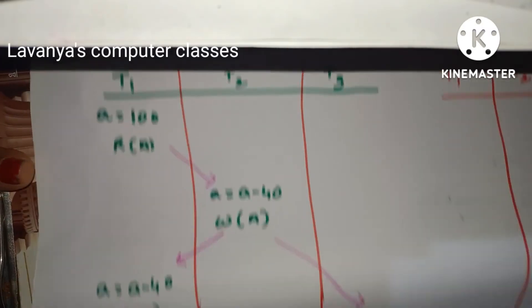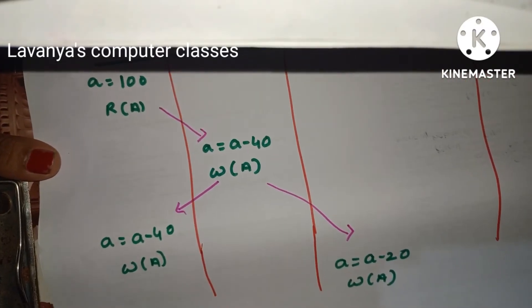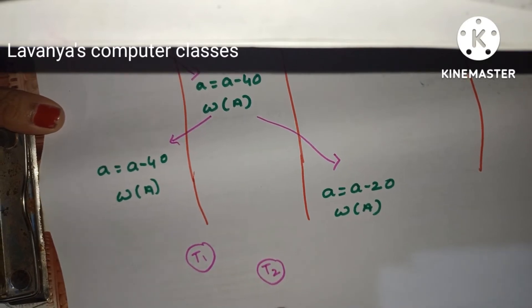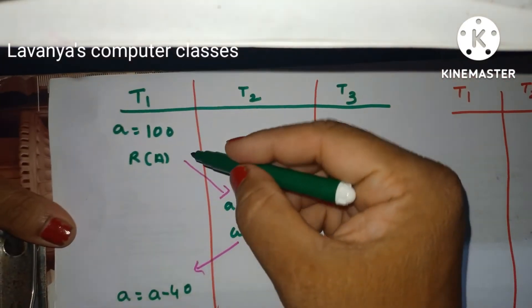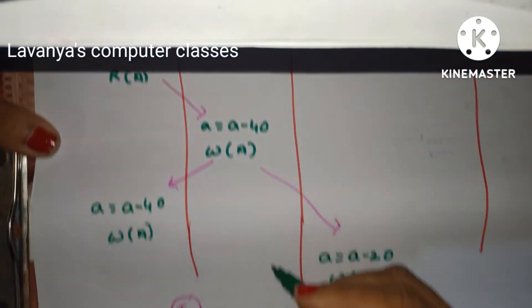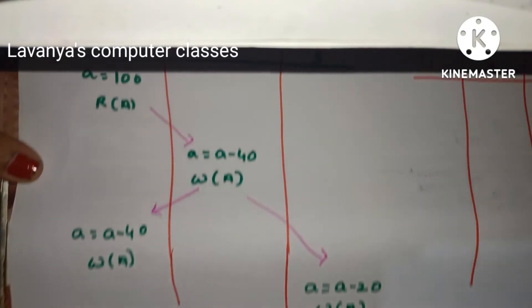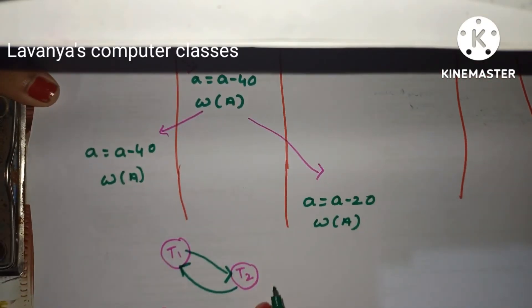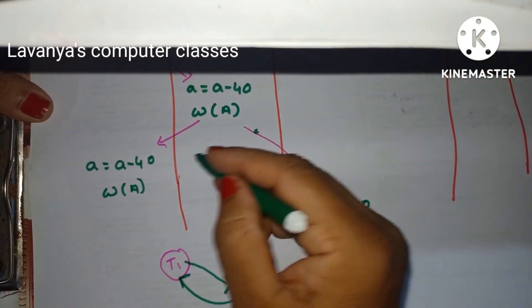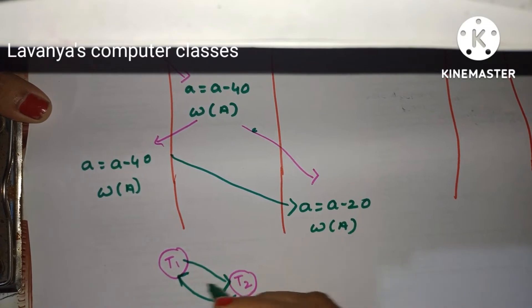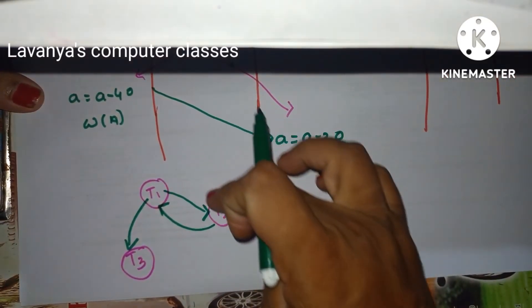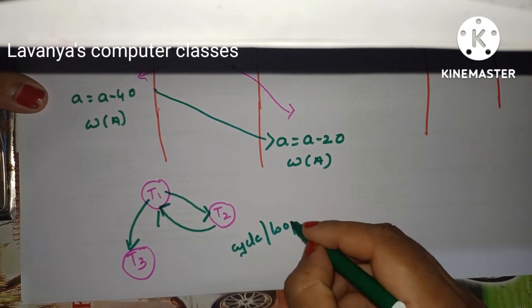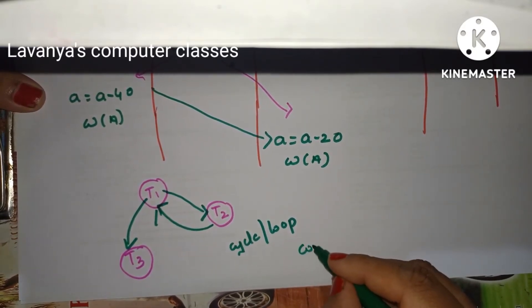Now draw the precedence graph. The number of vertices depends on how many transactions there are: T1, T2, T3. T1 goes to T2 — draw a directed edge from T1 to T2. Then T2 jumps back to T1 — draw an edge T2 to T1. Then T1 goes to T3. So looking at the graph: T1 → T2 → T1, a cycle is formed. Whenever there is a cycle or loop, it is not conflict serializable.